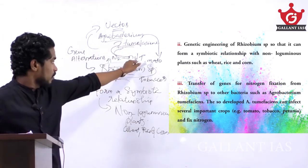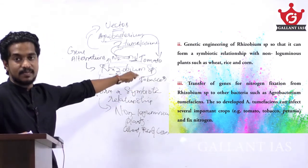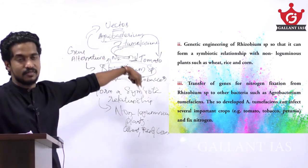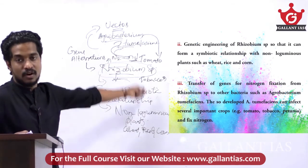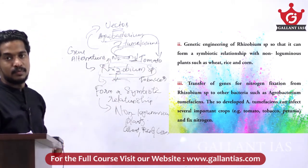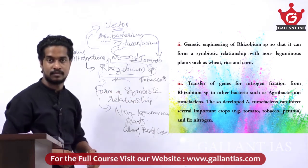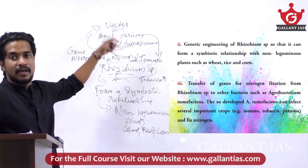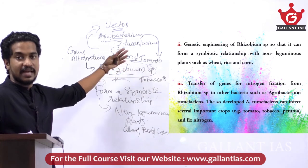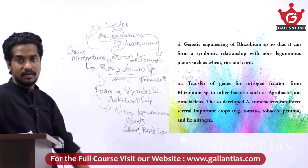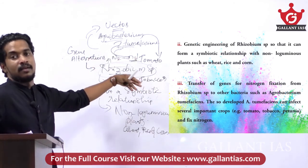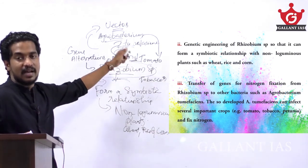Tomato and tobacco are non-leguminous plants. By applying the NIF genes into Agrobacterium and then transferring Agrobacterium to tomato and tobacco, these non-leguminous plants become capable of fixing nitrogen. By this method, nitrogen fixation can be carried out on non-leguminous plants using rDNA technology, and those plants gain the nitrogen-fixing capability.